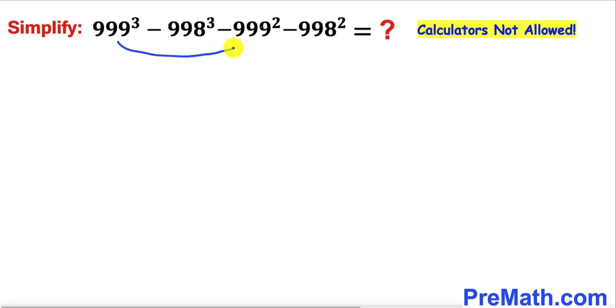I'm going to put these ones together and these ones together. Now we can see 999² is in common between these first two terms, and likewise 998² is common between these two.